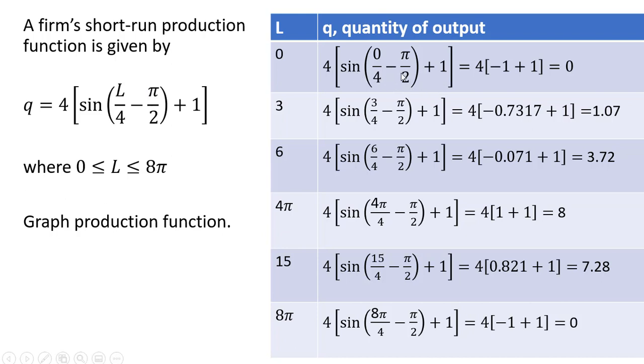And this sine function here will just equal minus π divided by 2, and that's just minus 1. Then we have this plus 1, and that will cancel, and this will just equal zero.